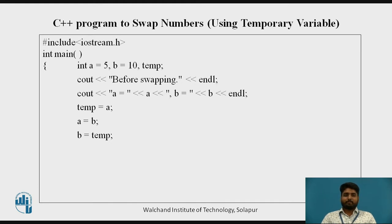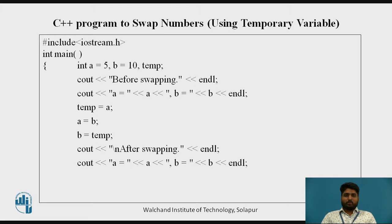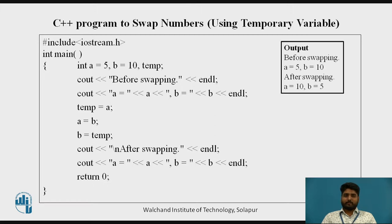In the first line, temp equal to a — the value of a was stored in temp, and now the temp value is stored back into b. So cout after swapping: cout a equal to — we call a, that a is nothing but the value of b — and we call b value, that b value is nothing but temp. Finally, the output will be: before swapping a equal to 5, b equal to 10; after swapping, the number gets swapped — a equal to 10 and b equal to 5.